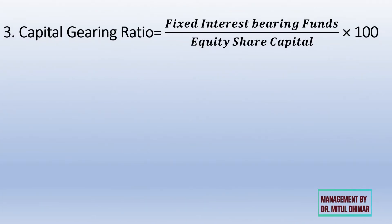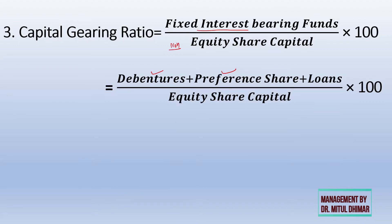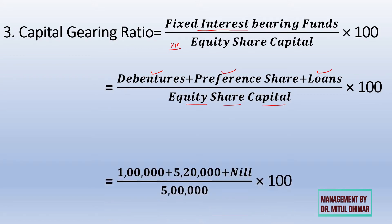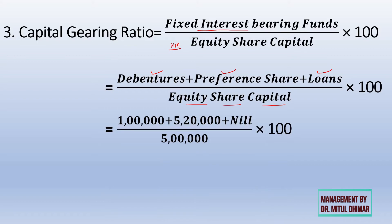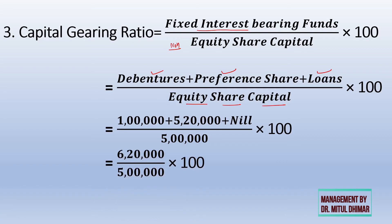The third important ratio is capital gearing ratio. This ratio indicates the proportion between capital on which we have to bear fixed interest or dividend against equity share capital — that is, fixed interest-bearing capital versus non-fixed interest-bearing capital. Fixed interest-bearing capital generally includes debentures, preference shares, and loans, as we pay interest or dividend at a fixed rate on them, divided by equity share capital which generally never has a fixed dividend rate. Here debentures are 1 lakh, preference share capital is 5,20,000, and there are no loans, giving 6,20,000 divided by 5,00,000 multiplied by 100 — that is 124%.